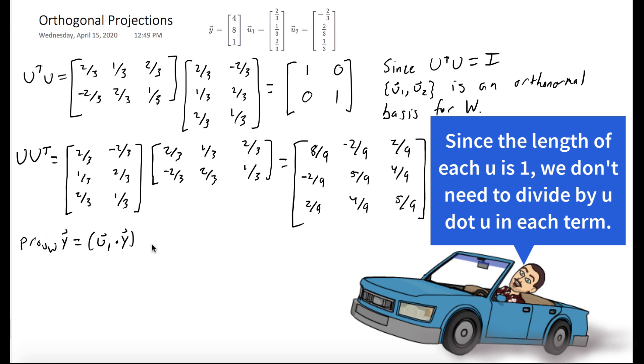So we want to compute the projection onto W of y. Well, since u1, u2 is orthonormal, we have this expansion. We could compute the dot product u1 dot y, that's 6, and u2 dot y is 3. So we add these vectors together and we get the vector [2, 4, 5].